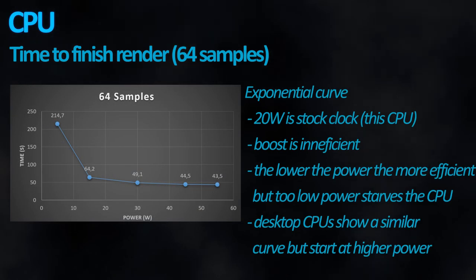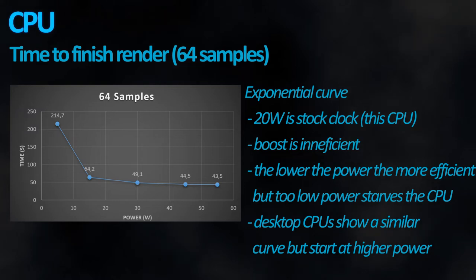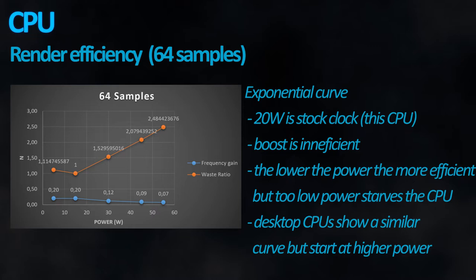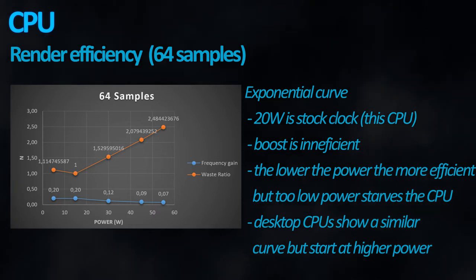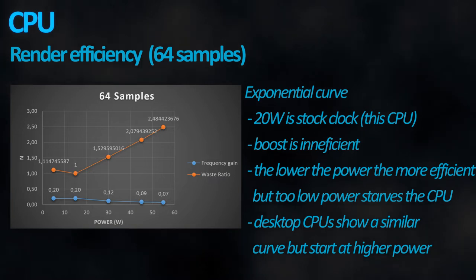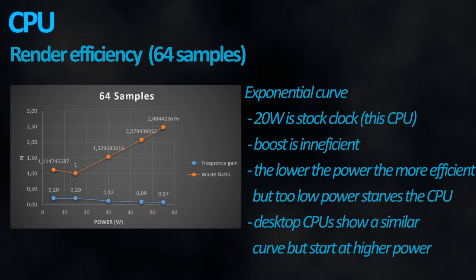The results are the typical exponential curve, where the higher the power is, the less additional performance you receive. This is most notable on the frequency gain, and it is where efficiency starts to drop. The waste ratio shown here is technically a simple calculation of how much power is needed to complete the task in its own unit of time, with one being the smallest. The reason why 5 watts is less efficient is probably because the power intake is so small the CPU ends up starved.